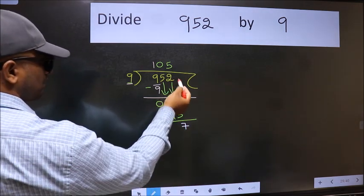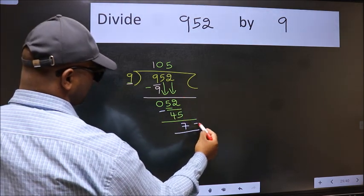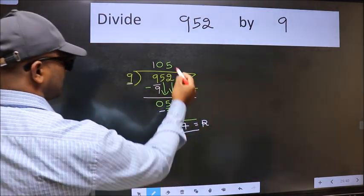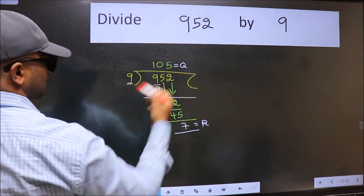No more numbers to bring down. So we stop here. This is our remainder and this is our quotient.